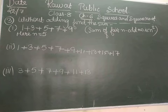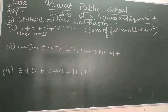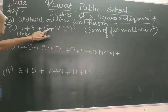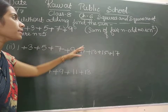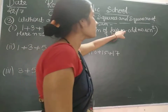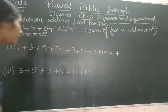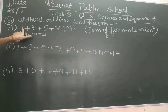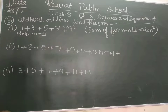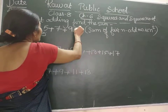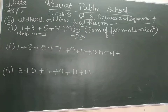In the next question, without adding, we have to find the sum. We are given 1 + 3 + 5 + 7 + 9. Recall that the sum of the first n consecutive odd numbers is n². Let us find how many numbers are given — n is 5. So the sum will be 5² which is 25.